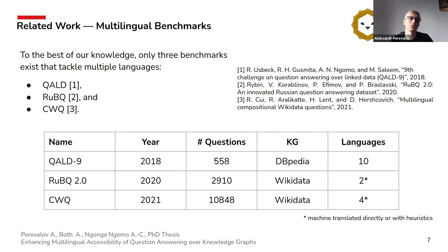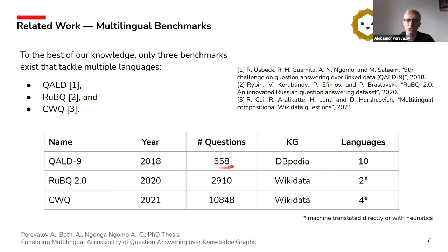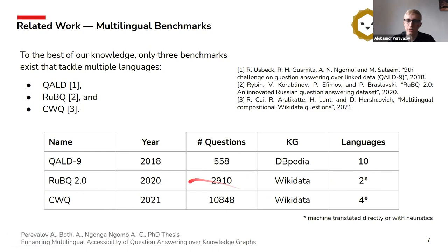Looking at the related work in the past decade, there were not so many multilingual benchmarks created. We can highlight QALD-9, which had nine versions — and this year will be another version. It has 10 different languages and works over DBpedia. Another dataset is Rubik, recently published, with 3,000 questions but two languages, one of which was machine-translated. The third dataset is CWQ, which has many questions and four languages, but unfortunately three of them were machine-translated from English.